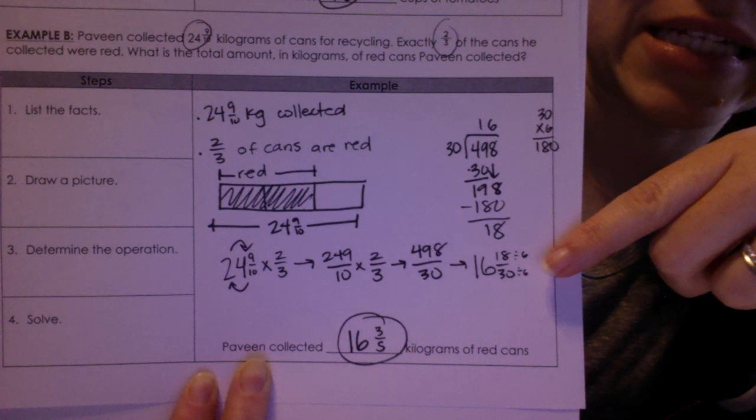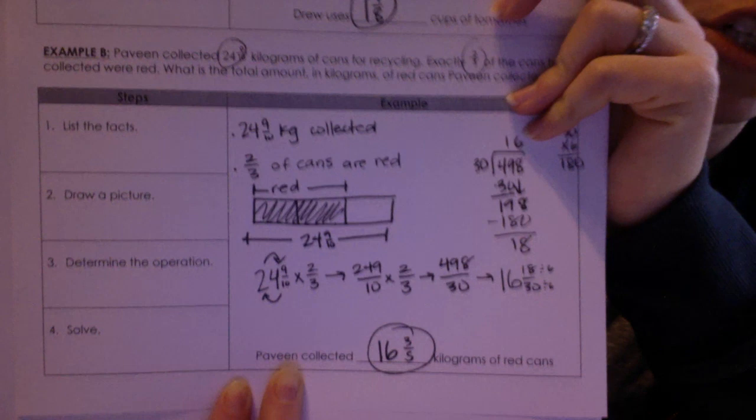So when I did that, I got 16 and 3 fifths. So that's your final answer for this problem, which again was multiplication with scaling.